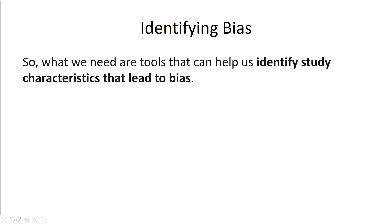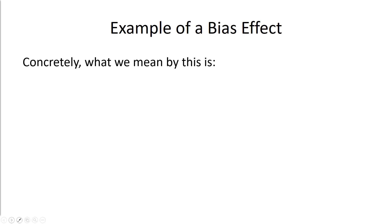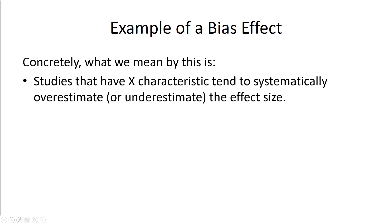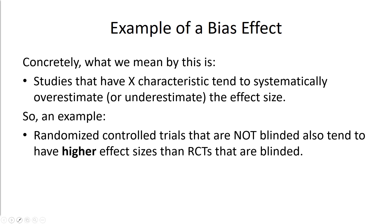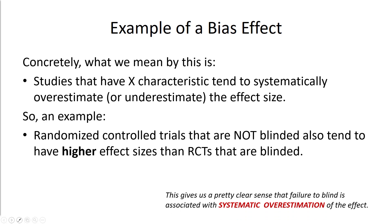How do we identify bias? We need tools that can help us identify study characteristics that can lead to bias. There has been a ton of research over the past decade to identify what specific study characteristics are associated with bias, so we don't have to guess. Concretely, studies with a particular characteristic tend to systematically overestimate or underestimate the true effect size. For example, randomized controlled trials that are not blinded tend to have larger effect sizes than blinded RCTs, giving us clear evidence that failure to blind is associated with systematic overestimation of the effect.